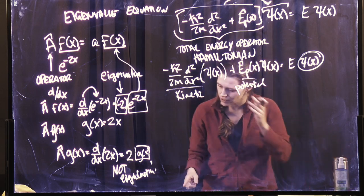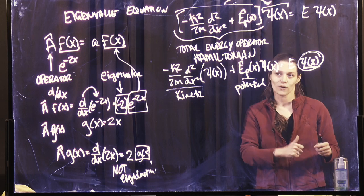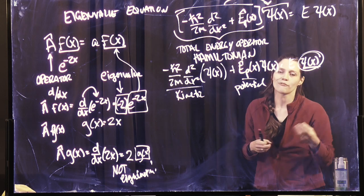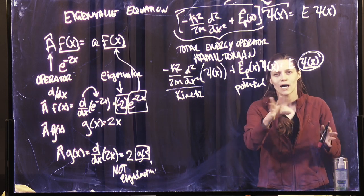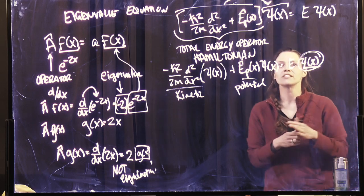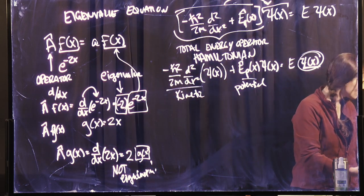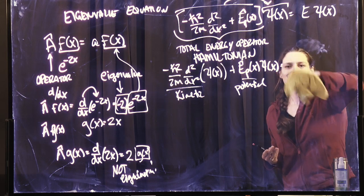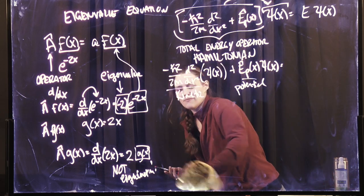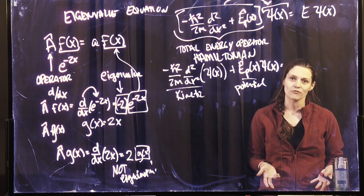There will be a different wave function for the particle for a hydrogen atom, for a lithium atom, for a particle bound to a box, for a particle bound to a sphere, for an electron. All of these wave functions are going to be different depending on the system, and our wave function contains all the information of our system.